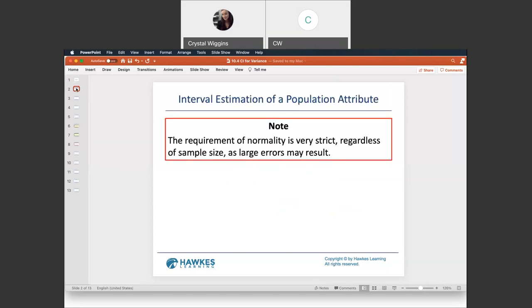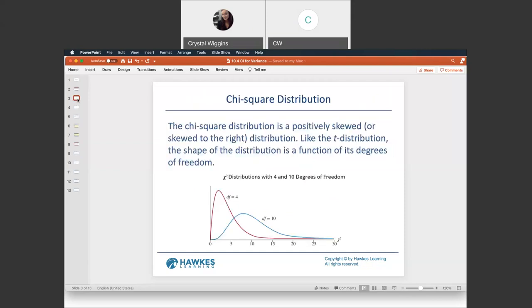The requirement of normality is very strict regardless of the sample size, as large errors may occur if we do not know that a population is normally distributed. We learned in 8.5 how to test for normality when we have the actual data set. If we are not given the data set, we are bound to the word problem itself and whether it mentions it or not. If it doesn't mention it, we will not be able to accurately compute the problem.